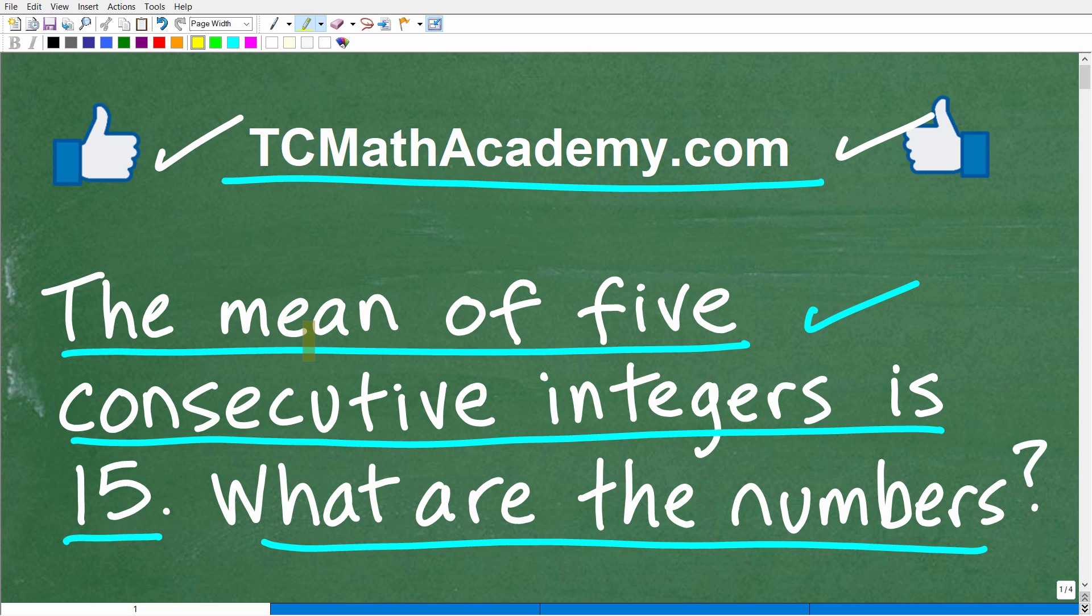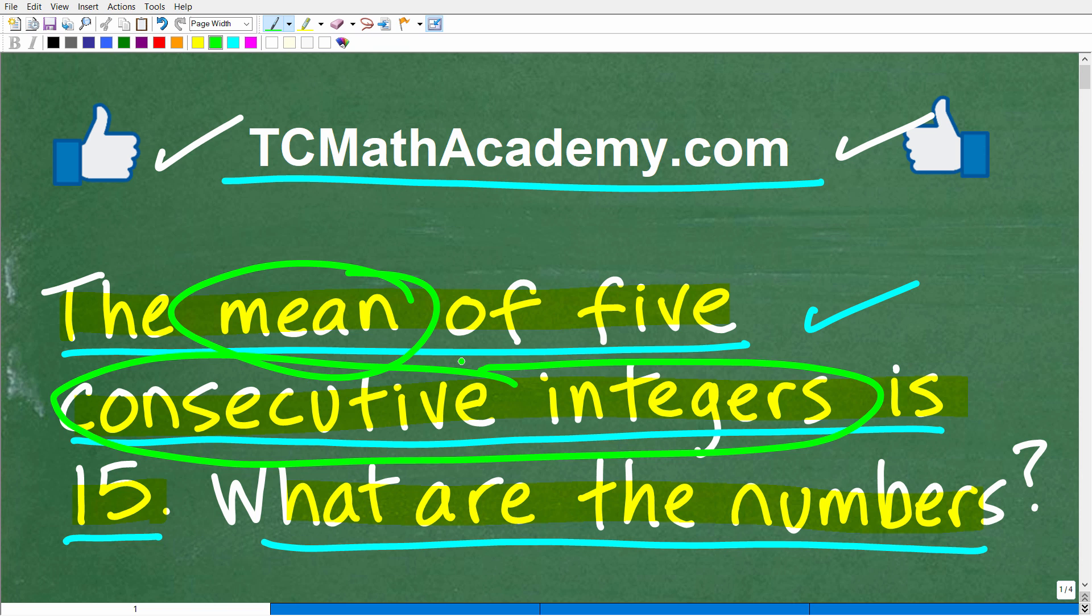All right, now let's go ahead and take a look at this problem one more time before I show you the answer. The mean of five consecutive integers is 15. What are the numbers? Now, obviously, you need to understand what this word means, which is quote-unquote mean. And you need to understand what a consecutive integer is, because if you don't know what the mean is or a consecutive integer is, you're going to be lost.